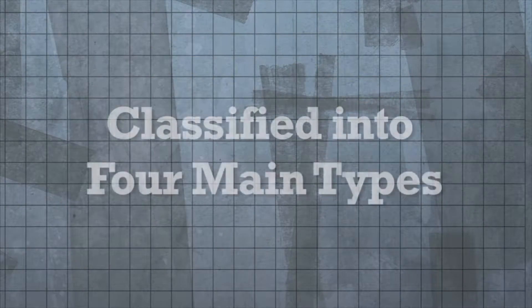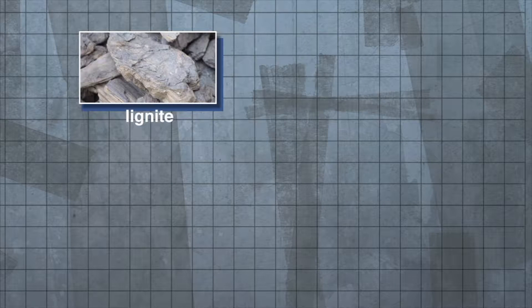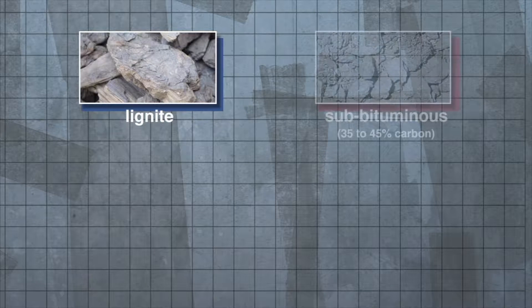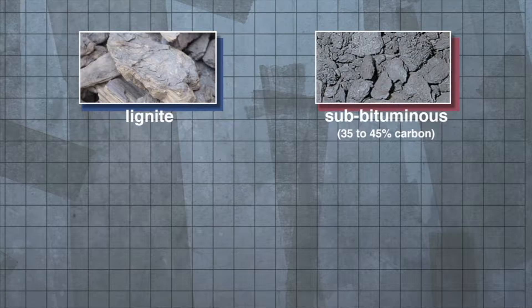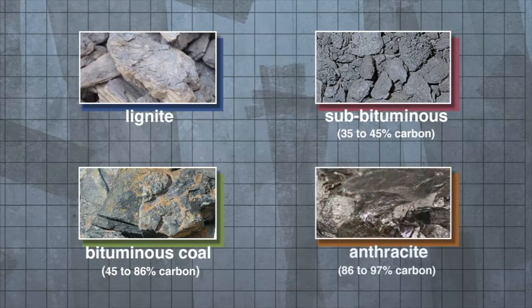Coal is classified into four main types depending on the amount and types of carbon it contains and the amount of heat energy it can produce. Lignite is the lowest rank of coal with the lowest energy content. Then, sub-bituminous coal, which contains 35 to 45% carbon. Bituminous coal contains 45 to 86% carbon and was formed under high heat and pressure. Then, anthracite, which contains 86 to 97% carbon and has a heating value slightly higher than bituminous coal.